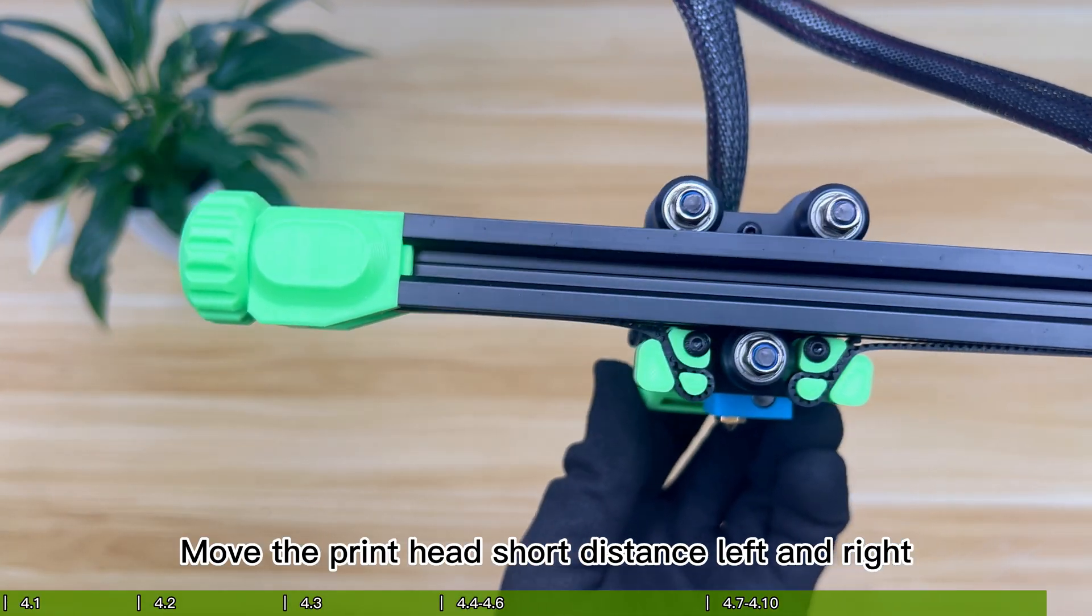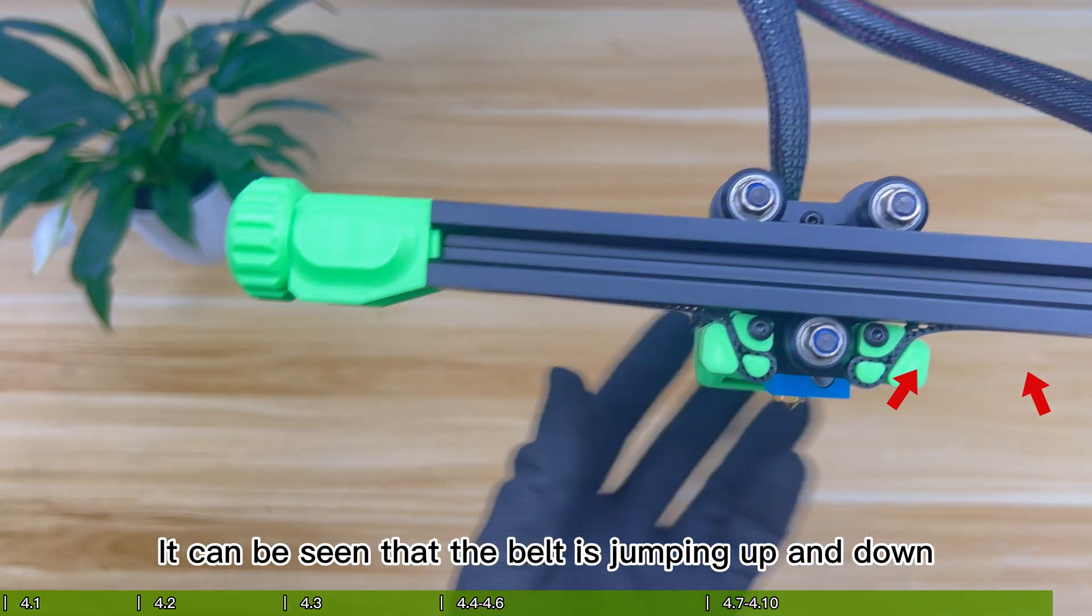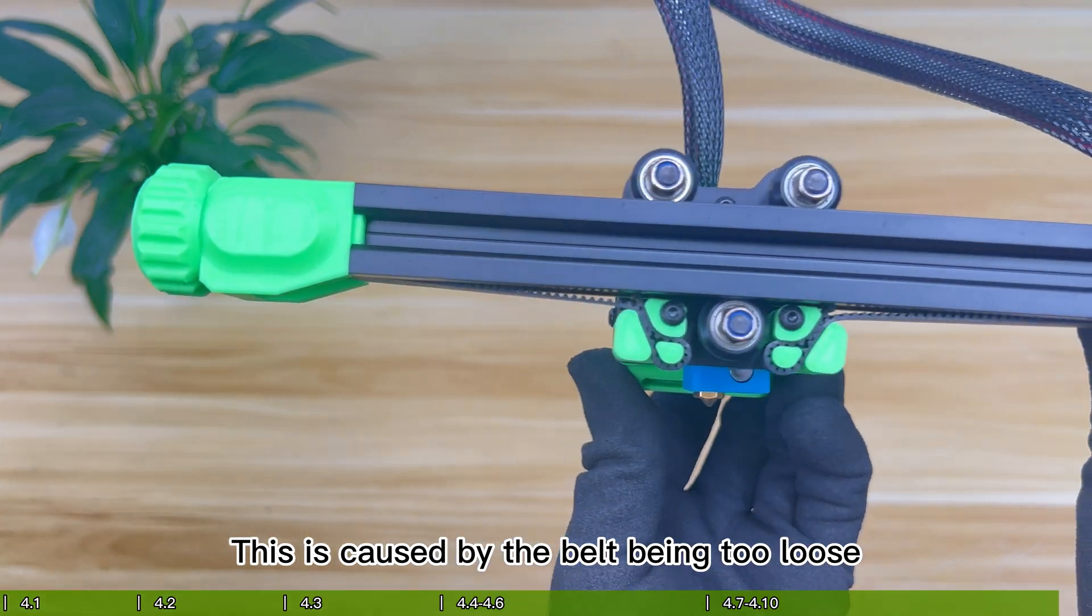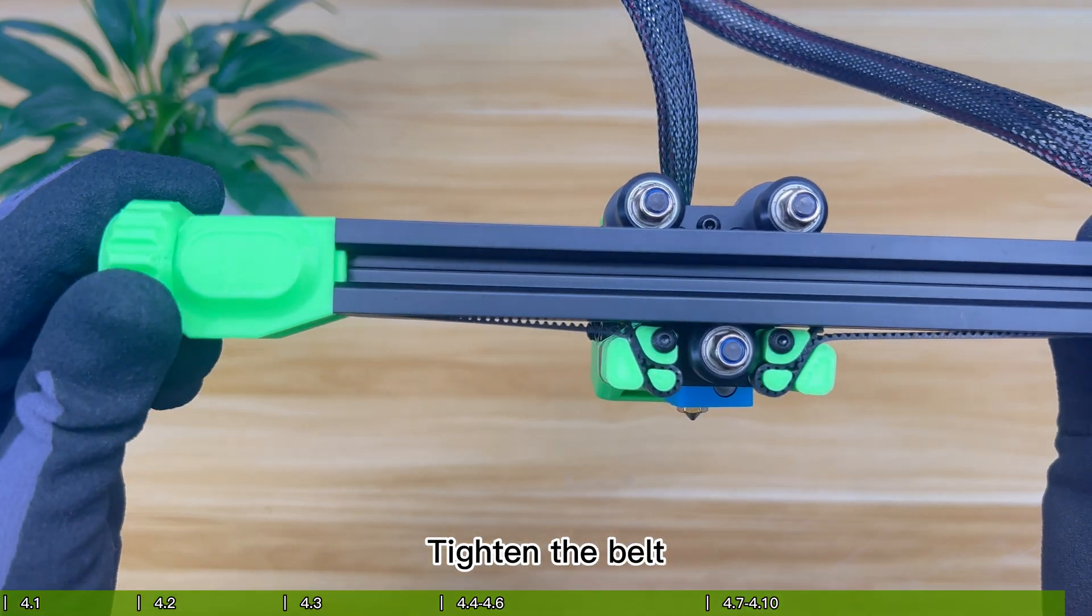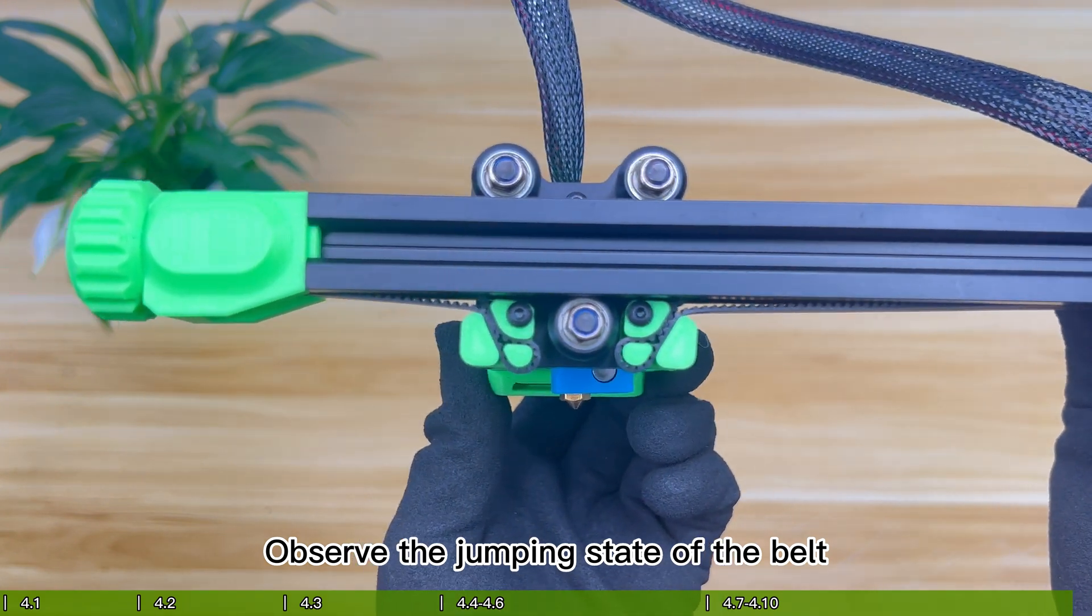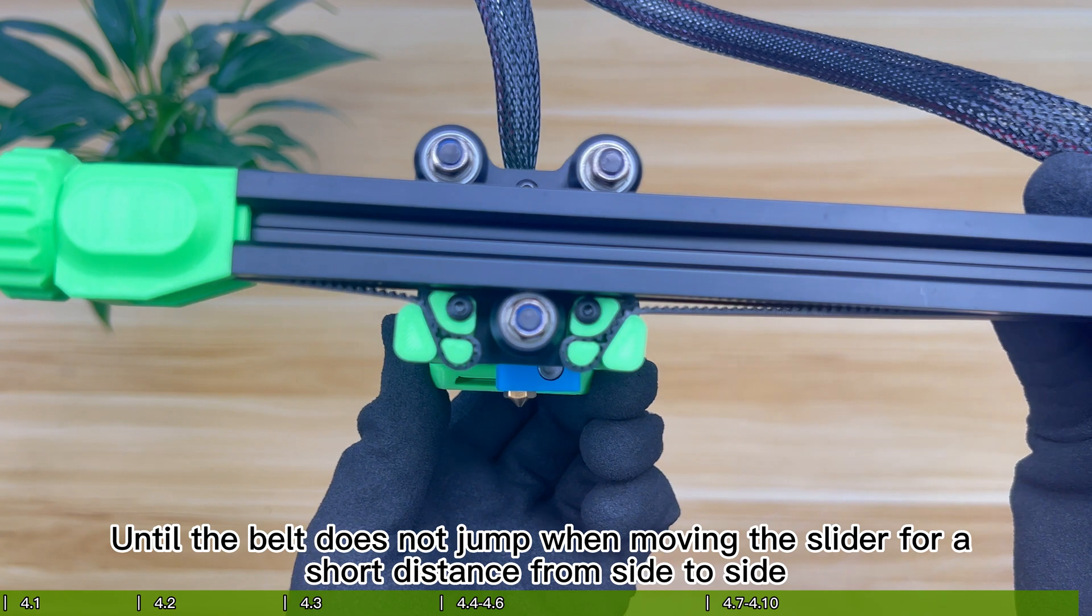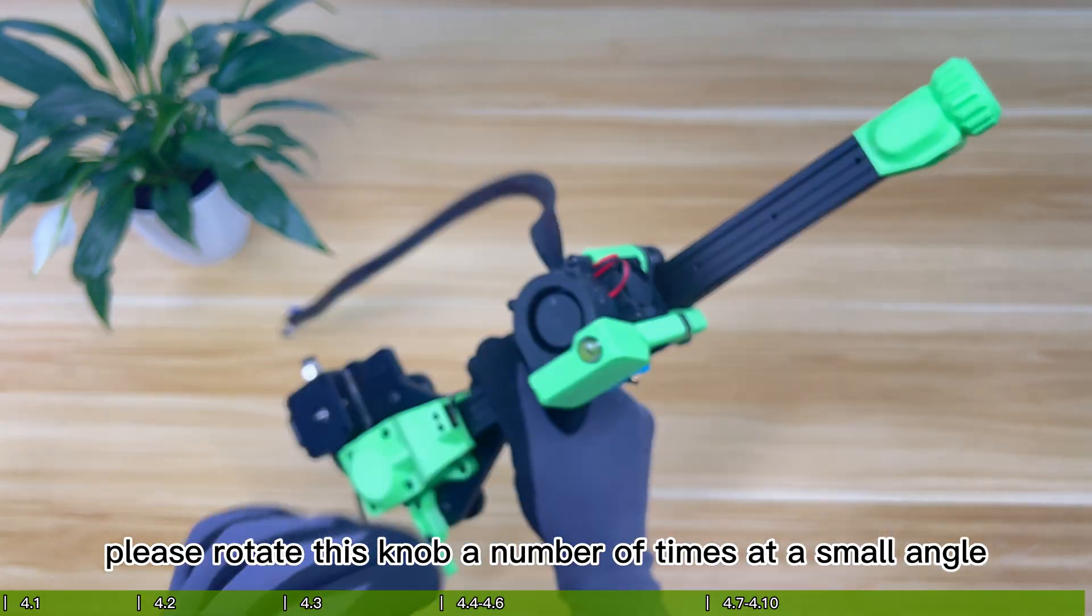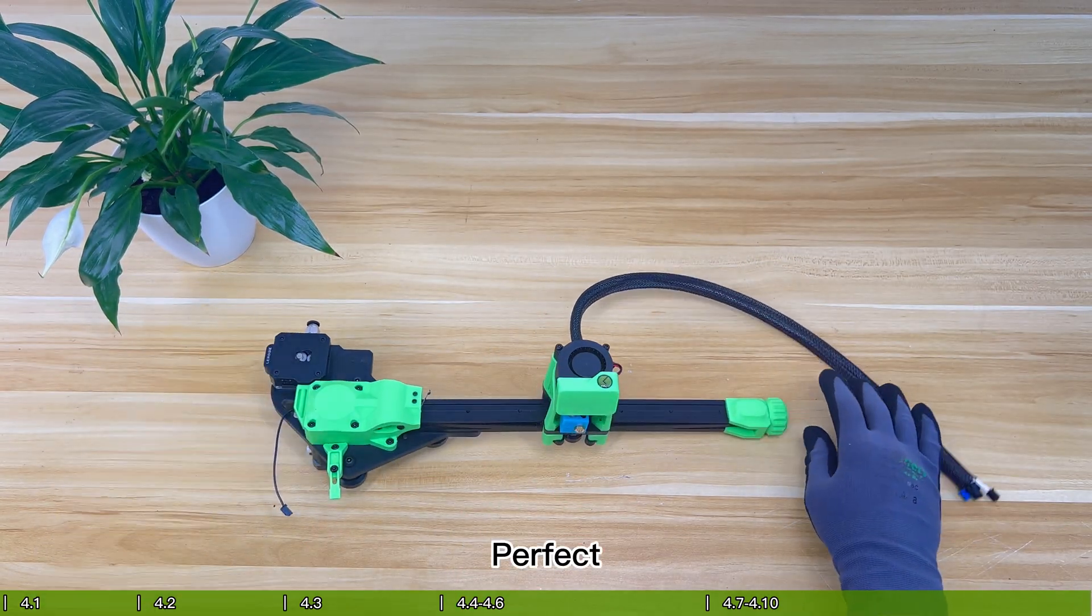Move the print head short distance left and right. It can be seen that the belt is jumping up and down. This is caused by the belt being too loose. Turn the adjustment knob clockwise. Tighten the belt. Then move the slider again. Observe the jumping state of the belt. Until the belt does not jump when moving the slider for a short distance from side to side. When adjusting the knob, please rotate this knob a number of times at a small angle. Perfect.